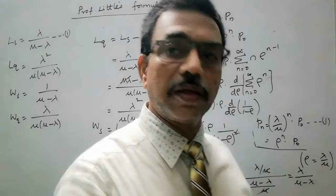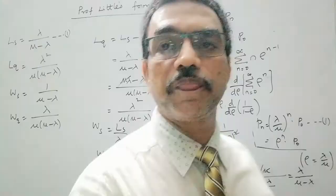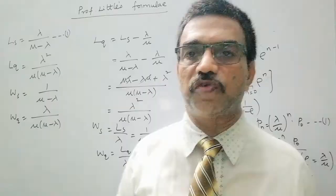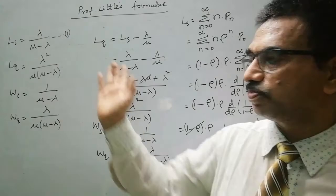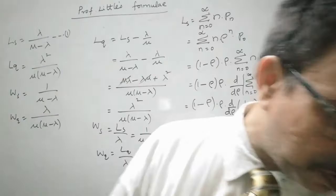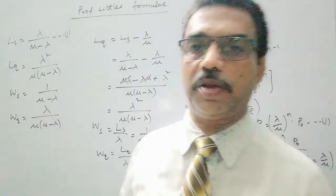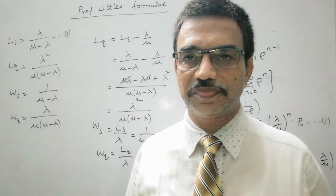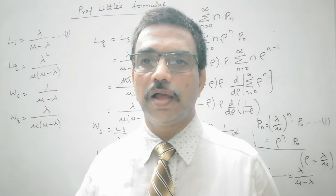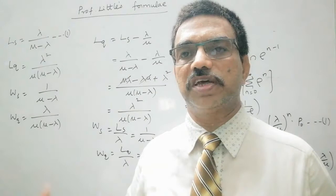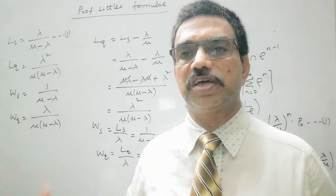These are the expressions derived for a single server queuing model as per Professor Little — that is why these expressions are called Professor Little's formulae. This is how we derive the queuing parameters Ls, Lq, Ws, and Wq. The expressions will change depending on the type of queuing system — for multi-server models, limited source models, or limited capacity models. In some other video I will explain the expressions for different queuing parameters for different queuing models. Thank you very much.